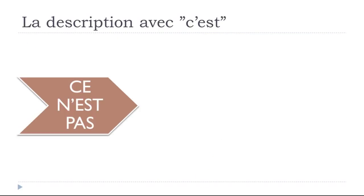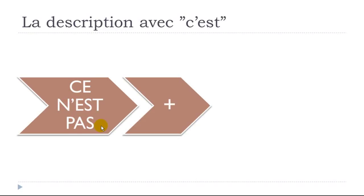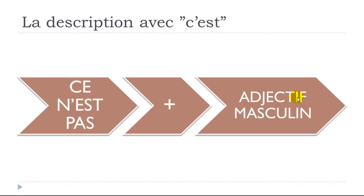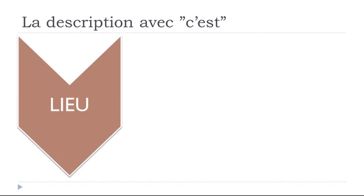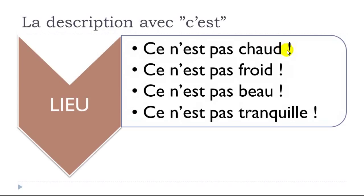The second option is to put this structure in the negative form. You just add, as usual, 'ne' before and 'pas' after the verb, and the adjective stays at the masculine form. For a place: 'Ce n'est pas chaud,' 'Ce n'est pas froid,' 'Ce n'est pas beau,' 'Ce n'est pas tranquille.'